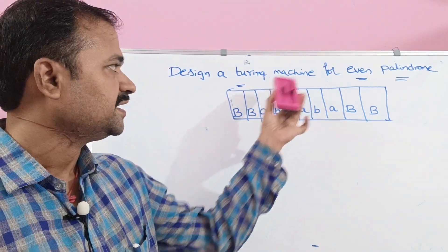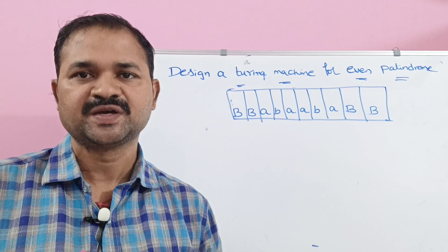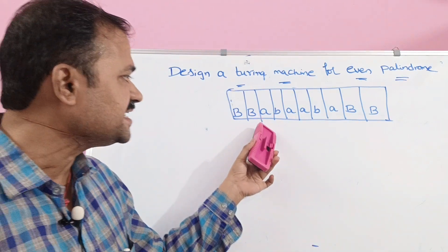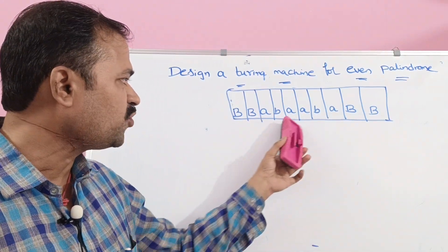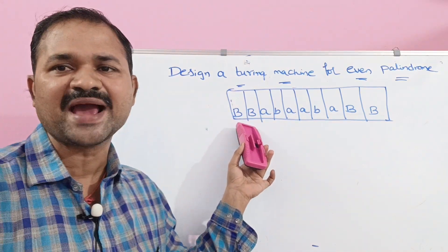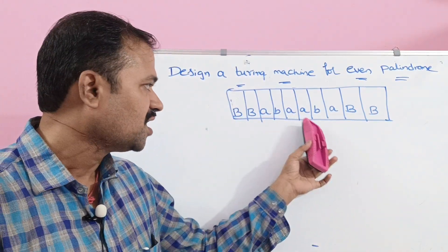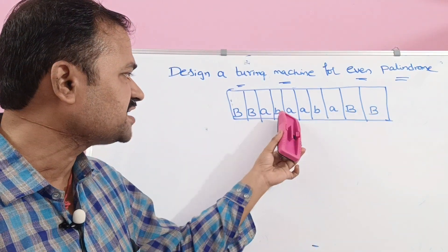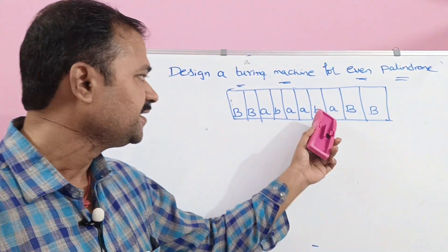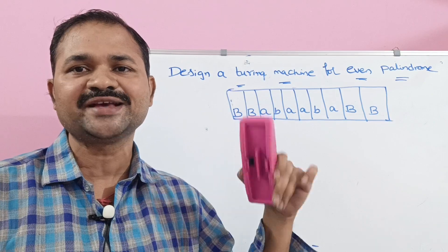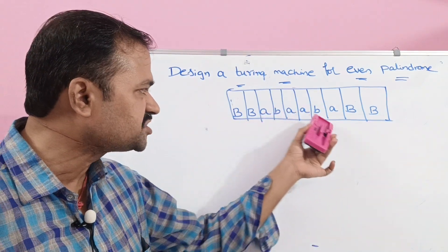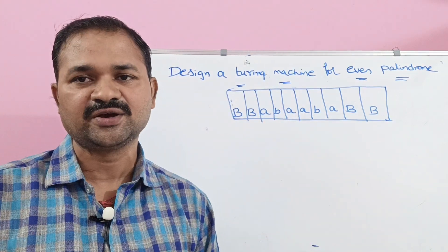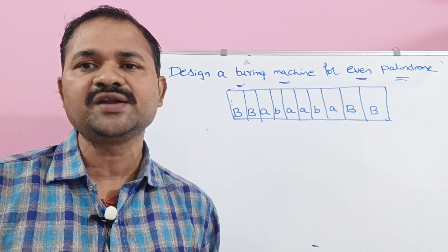Let us see this example: design a Turing machine for even palindrome. A palindrome means the reverse of a string is equal to the given string. Here the string is ABAABA. Before and after ABAABA we can have any number of blank symbols. If we reverse ABAABA, we get ABAABA only, so this is a palindrome string. The length of this string is 6, so it is called an even palindrome string. If the length of a string is even, it is called an even palindrome.